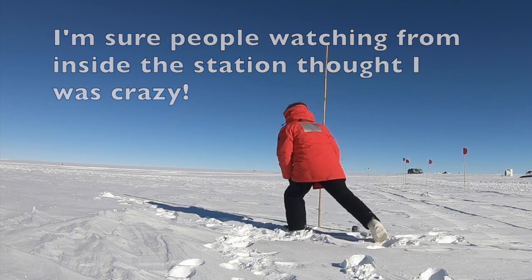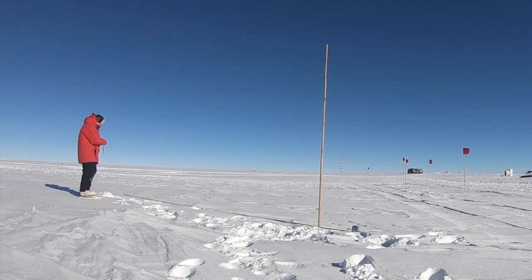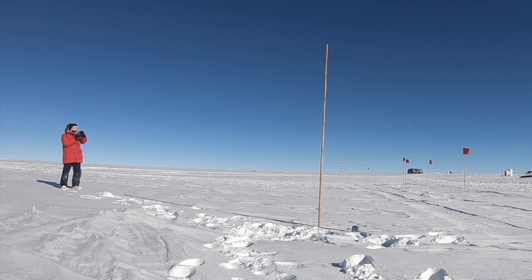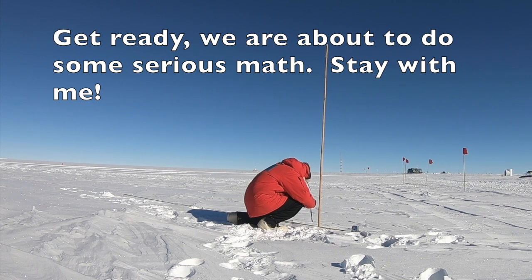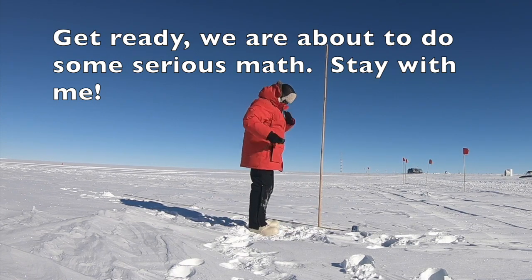The top of the pole to the end of the shadow will be the hypotenuse of that triangle. That's important because we know the opposite and adjacent angles for the math we're about to do.